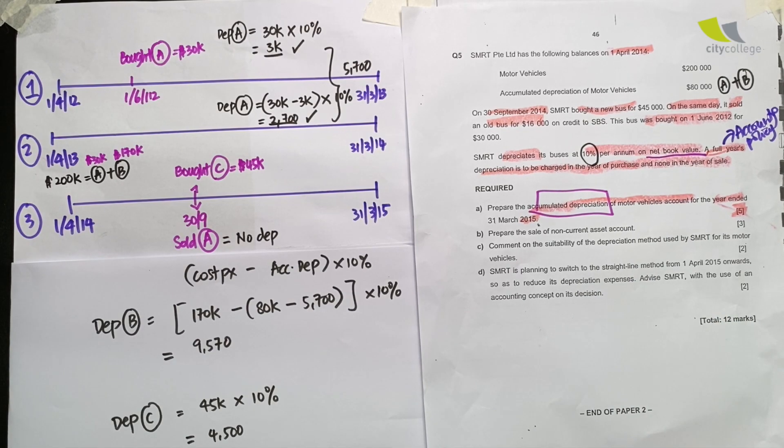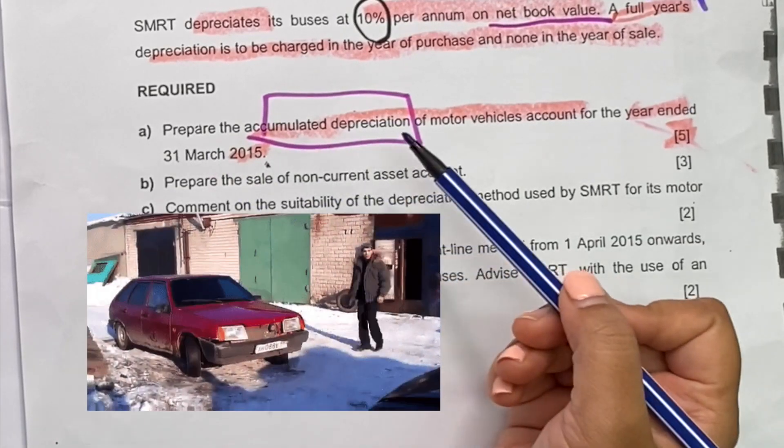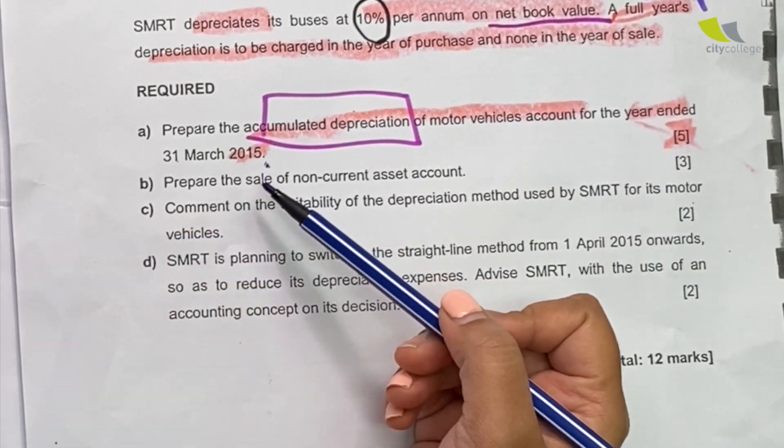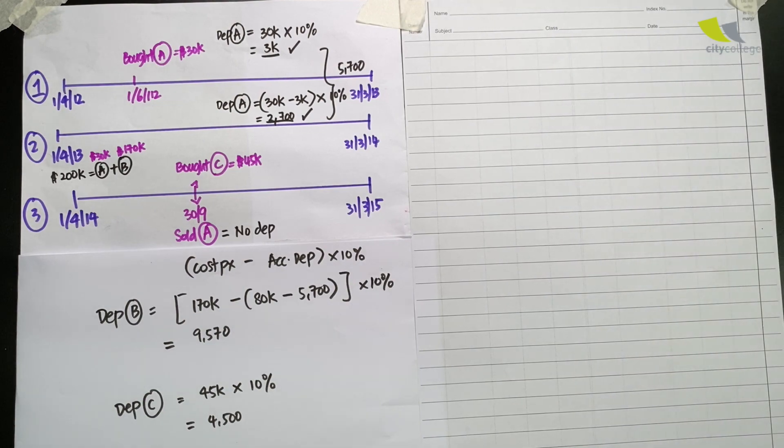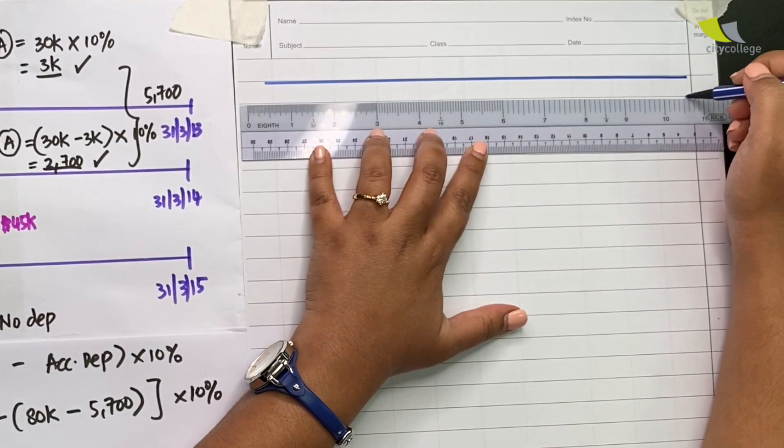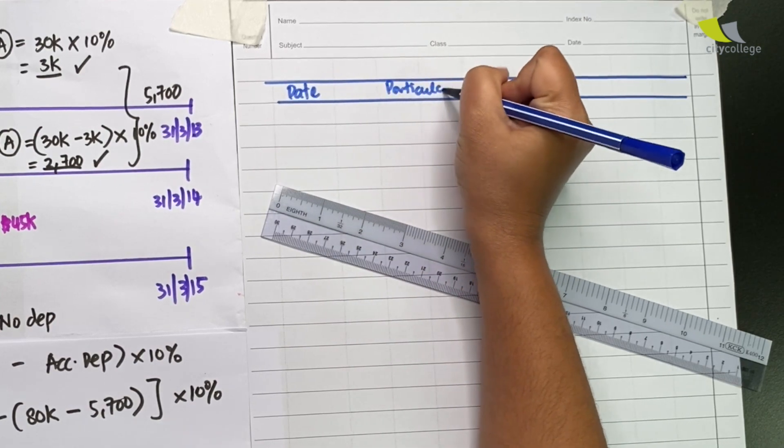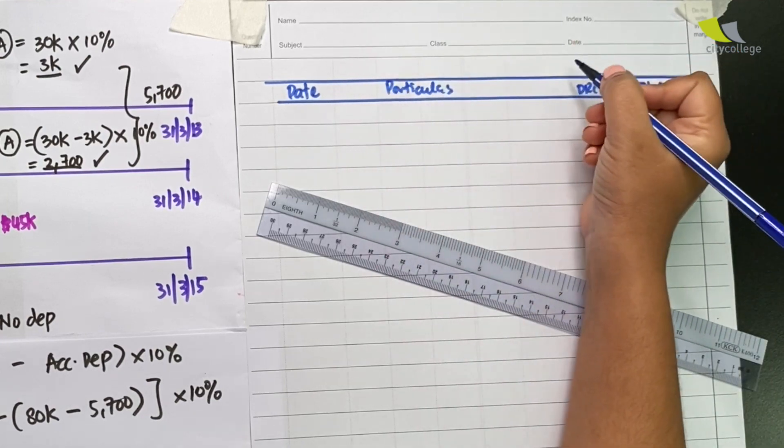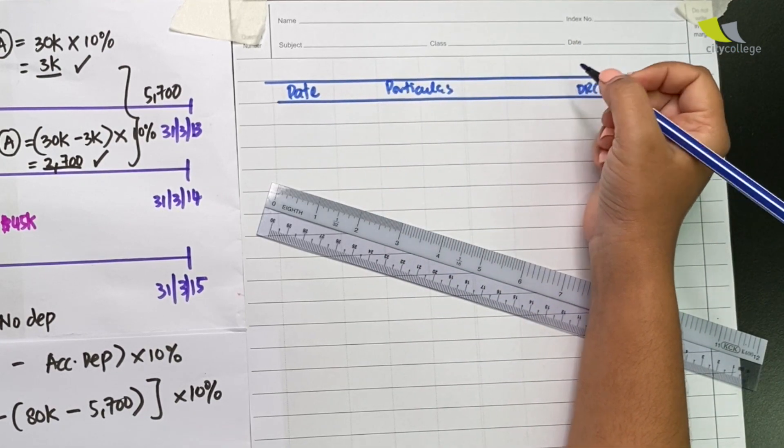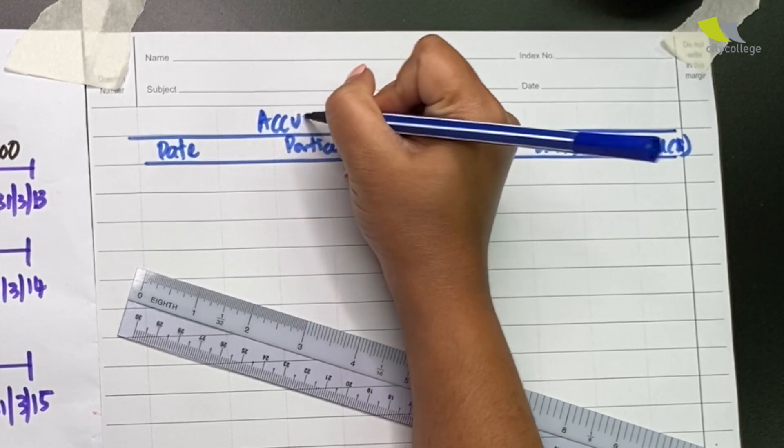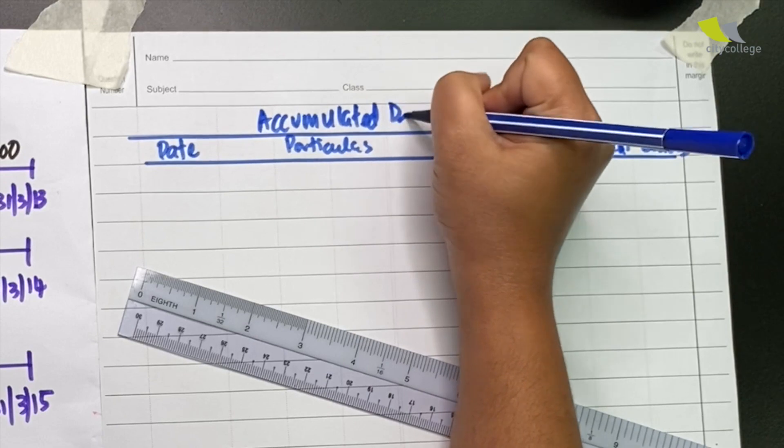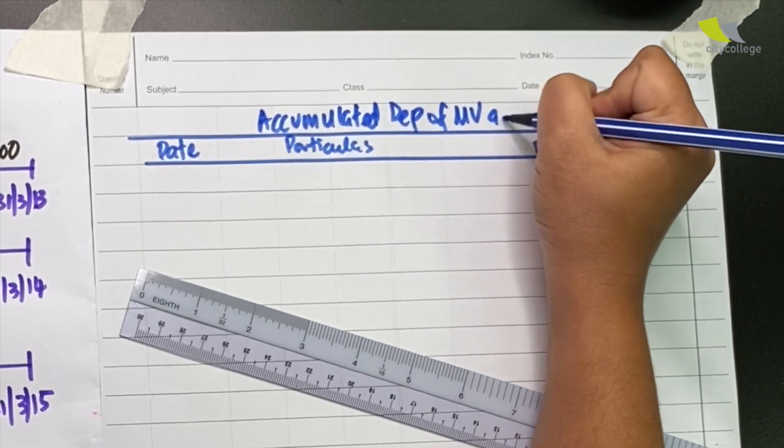Now that we've done all the workings, let's proceed to answer the question. The question says prepare the accumulated depreciation of motor vehicles account for the year ended 31st March 15. Let's proceed to draw the account. For every account, the headings are standard: date, particulars, debit, credit, balance. But the title of the account differs according to the question. In this case, we are to prepare the accumulated depreciation of motor vehicles account.